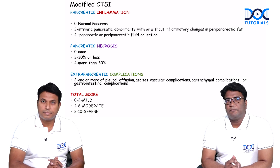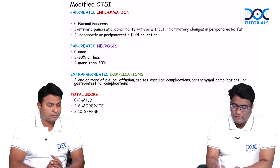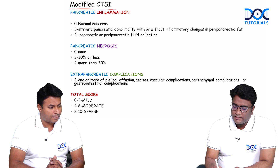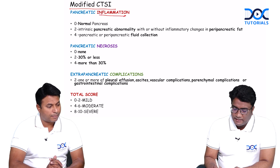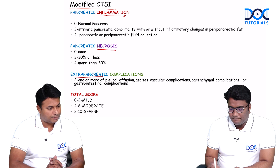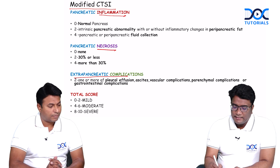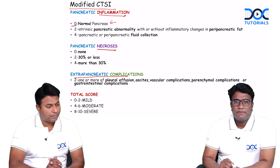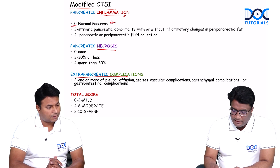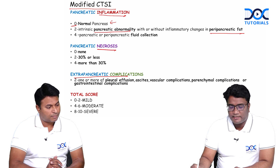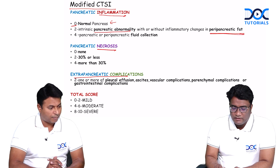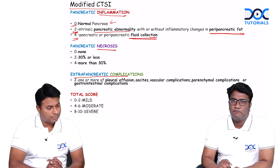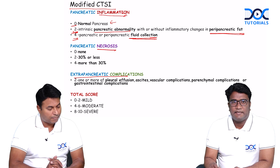To grade the severity of pancreatitis, we have what is called the Modified CT Severity Index. In this index, we look at pancreatic inflammation, pancreatic necrosis, and any extra-pancreatic complications, and each is given a different score. If there is a normal pancreas, we score it as zero. If there is any pancreatic abnormality with peripancreatic fat inflammation, we give it a score of two. If there are peripancreatic fluid collections, we give it a score of four.